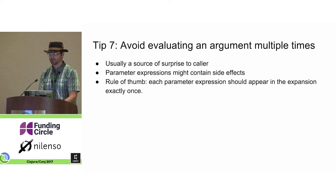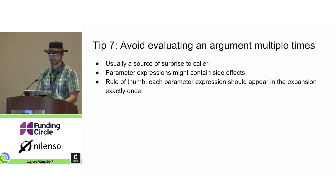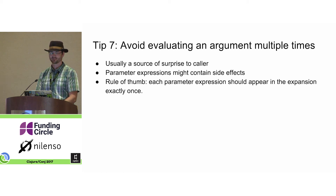Tip seven: avoid evaluating an argument multiple times. This is usually a source of surprise to the caller. If you're intentionally doing that and it's the intended use case of your macro, that would obviously be an exception. But it's especially surprising if one of the input expressions contains a side effect and that side effect happens multiple times — that might be a source of great surprise. So a good rule of thumb is that each parameter expression should appear in the expansion exactly one time. Obviously that can be violated, but know what you're doing.